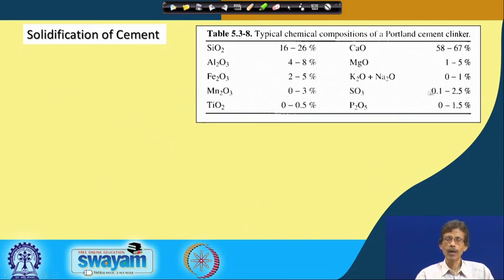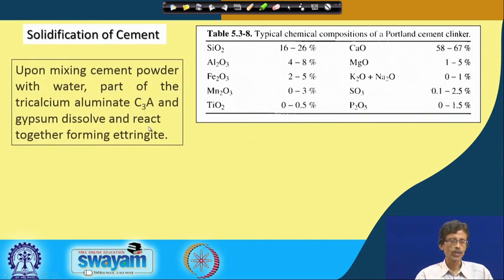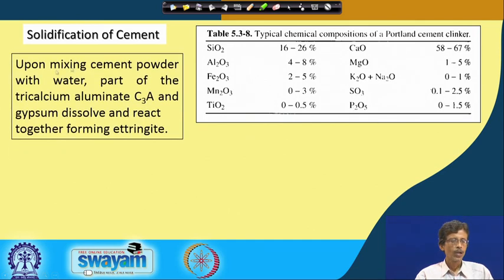Different companies make different varieties of cement by adding other materials. You can also have manganese oxide, titanium dioxide, and potassium and sodium oxides at 0 to 1 percent. Below 1 percent you have oxides of potassium and sodium, and sulfur trioxide and phosphorus pentoxide can also be present — below 2.5 percent and below 1.5 percent of phosphorus and sulfur trioxide respectively.